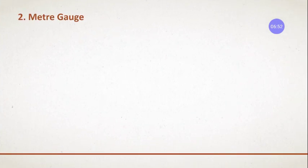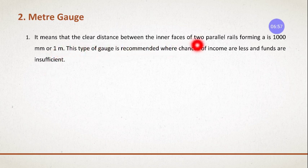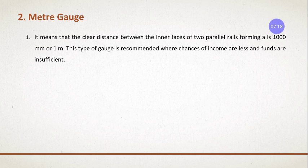Next is meter gauge. Meter gauge means the clear distance between the inner surfaces of two parallel rails is one meter - the name itself tells you the measurement. This type of gauge is recommended where the chances of income are less and funds are insufficient.